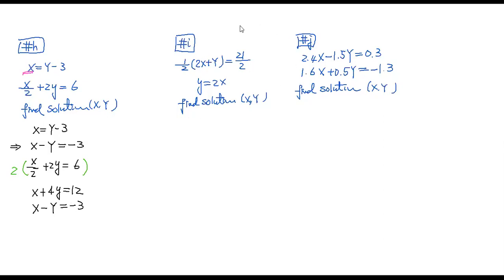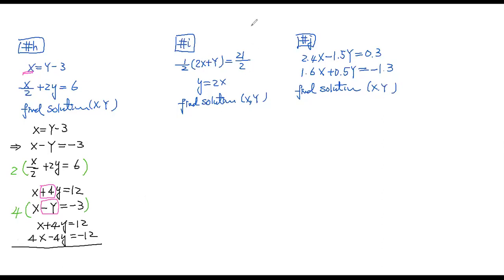Now I want to eliminate. I have 4y and negative y, so let me times 4 on both sides of the second equation. That gives 4x minus 4y equals negative 12. The first equation is x plus 4y equals 12. When I add them together, the y terms cancel, and I get 5x equals zero. So x equals zero.